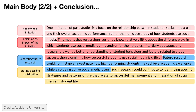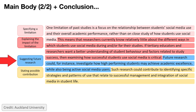Here's another example focusing on identifying limitations and future research. The first sentence specifies a limitation, the next few sentences explain its impact, then you suggest future research ideas, and the final sentence of the paragraph states the possible contribution.